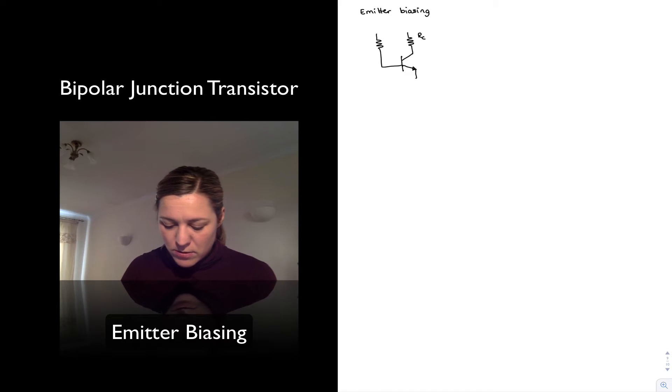My base connected also to the supply via a base resistor RB. But now I do have emitter resistor RE. That's why it's called emitter biasing.